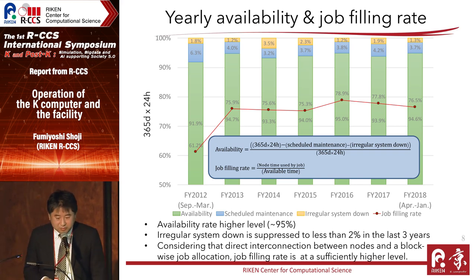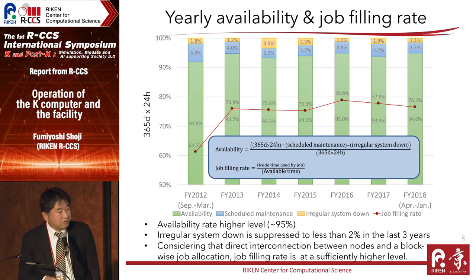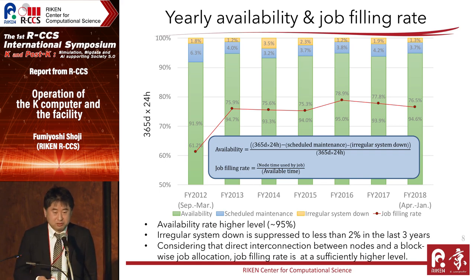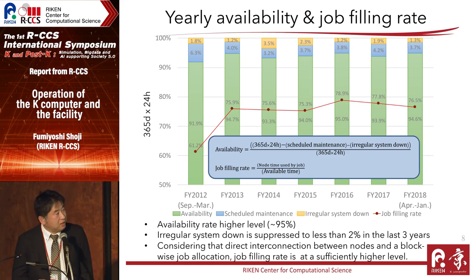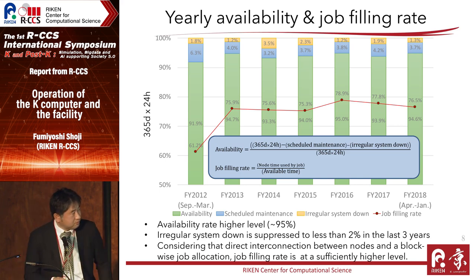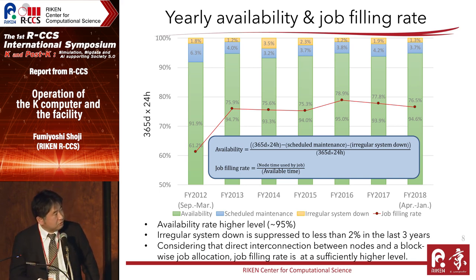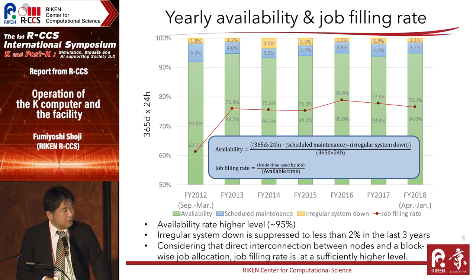Somebody may think 75 to 80 percent job filling rate is not so high, but the interconnect of the K-Computer is a direct connection type and we adopted a blockwise job allocation rule. Considering that situation, this score is not so bad, I think.